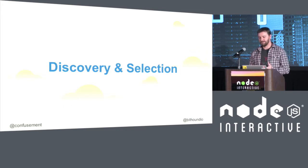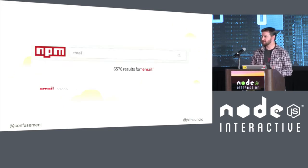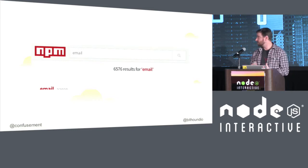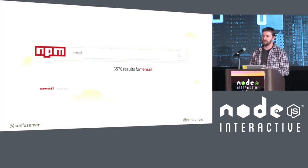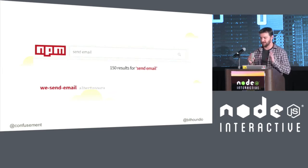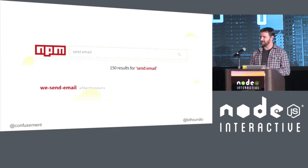Getting into discovery and selection — I was at JSConf last week and I went on NPM and typed in 'email' and got over 6,500 results. I thought, well, that's fantastic, which one do I get? I said, hold on, I just want to send email. So I refined it and got 150 results. Yay, this is so much better than 6,500 — but it's still 150 things that I need to go and vet.